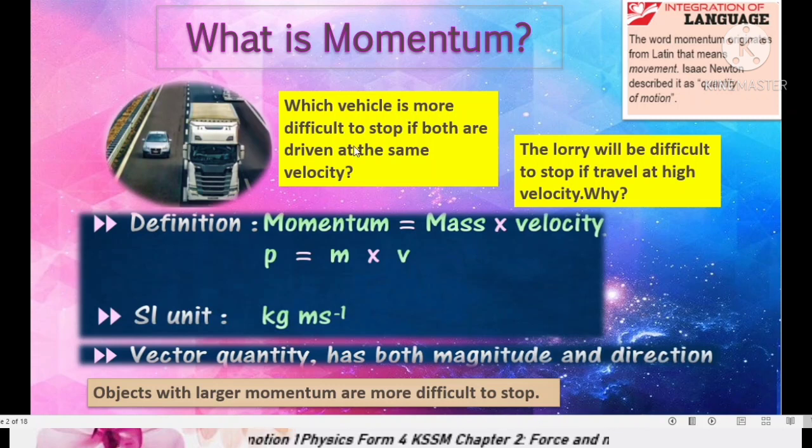Which vehicle is more difficult to stop if both are driven at same velocity? Of course we can say the lorry is heavier. So the lorry will be difficult to stop if travel at high velocity. Why? What happens if both vehicles not travel at same velocity? We can answer it by using the concept of momentum.